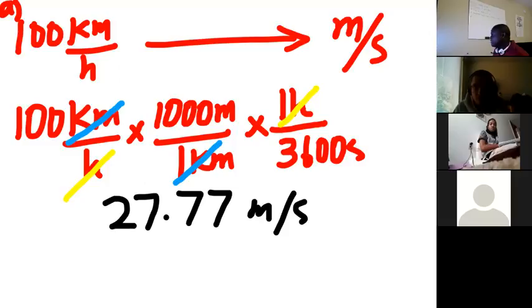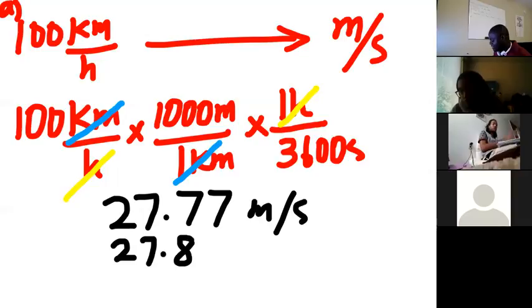You know why I say at most? Because when you have a number that ends with zeros, it's ambiguous. It could be that only the one is significant, or all three digits are significant. So we say at most three significant digits. So we're going to report this answer to three significant digits, which would be 28 m/s.